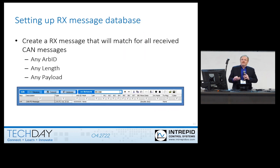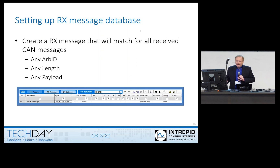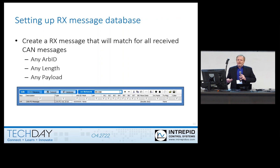As mentioned, you need databases on the transmit and receive networks to set this up. The first thing to do if you want to transmit all the CAN data onto Ethernet is set up a receive message in the database that matches anything that shows up — any arbitration ID, any length, any payload. You do this by selecting the CAN network. In this case I'm using CAN-FD with a 29-bit arbitration ID, putting don't-cares or X's in the arbitration ID and leaving everything else blank, so any message that comes in on HS CAN will match and trigger a rule in Gateway Builder.